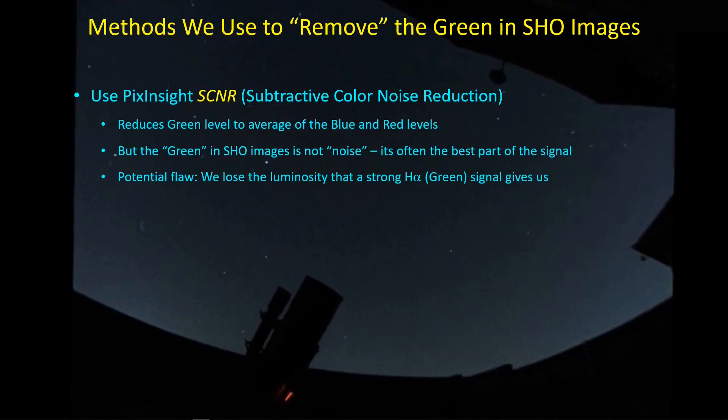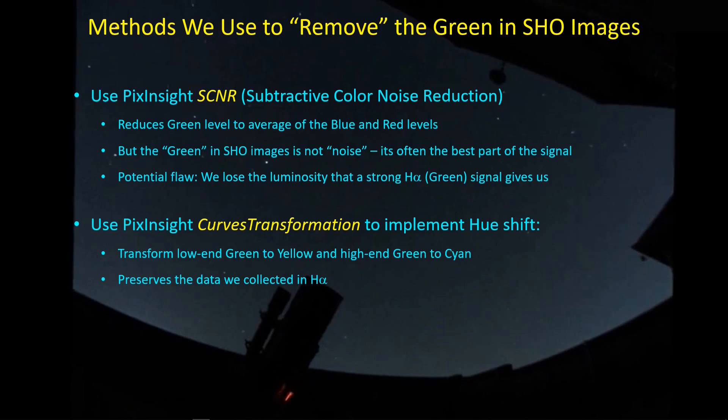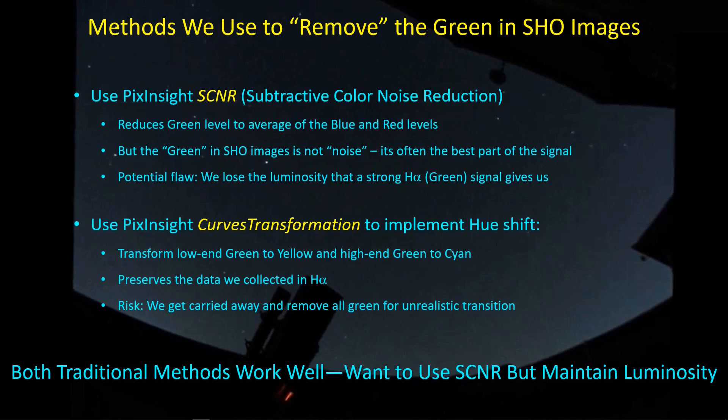We don't just have the SCNR approach. We also have the curves transformation in PixInsight, and we can implement a hue shift. This is a good way of preserving that data. We just change its color. The idea is that we transform low-end green to yellow and high-end green to cyan with a little bit of green variation in between. This is a great way of preserving that good data we have in HA. We just split it off into more yellow and cyan colors. You can easily get carried away with these hue transformations and delete all the green from an image. Both of these methods work just fine. I find some images might respond better to the SCNR approach while other targets respond better to the curves transformation approach.